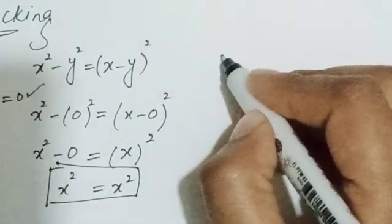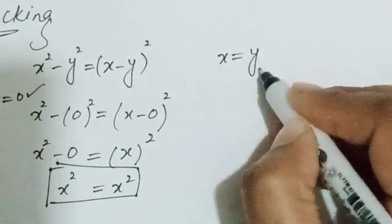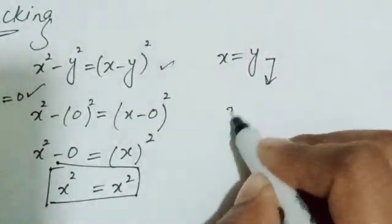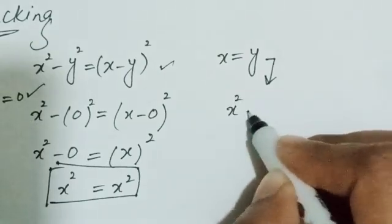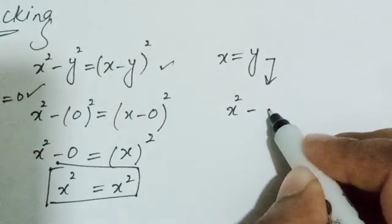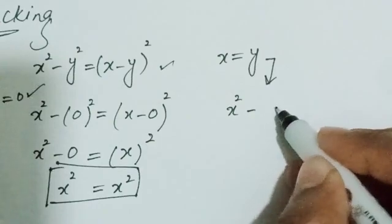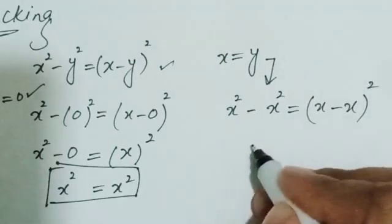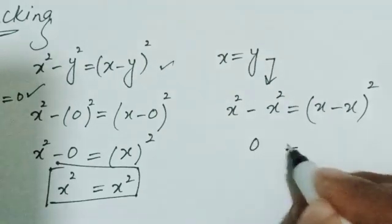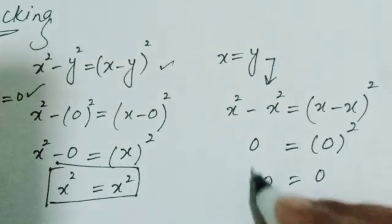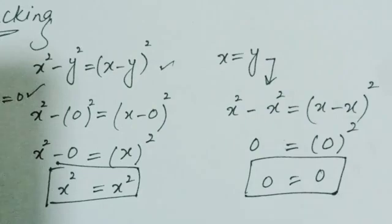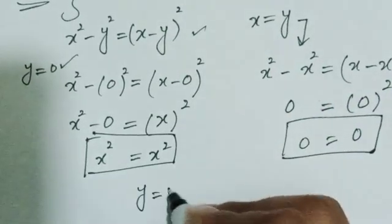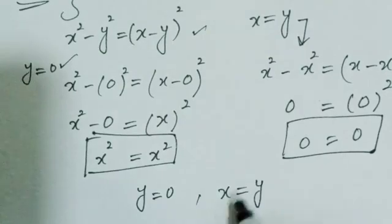Now let's check for x equals y. Substituting x in place of y: x squared minus x squared equals (x minus x) whole squared, which gives 0 equals 0 squared, so 0 equals 0. This also satisfies our equation. Therefore, the two roots y equals zero and x equals y both satisfy the original equation.